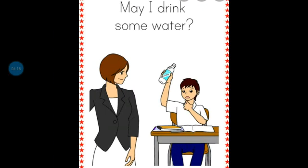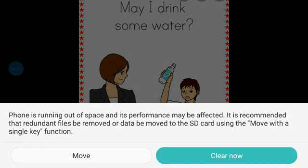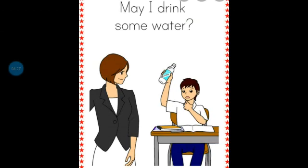Next, you can see one boy is sitting, and he is taking permission from the teacher. What he is asking: May I drink some water? The boy is thirsty and he wants to drink water. In the class, first of all, he has to take permission from the teacher, only then he can drink water. So he is taking permission from the teacher, and what he will say: May I drink some water? Students, if you feel thirsty, you have to say: May I drink some water?